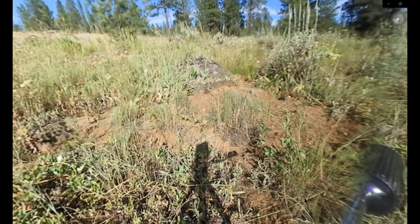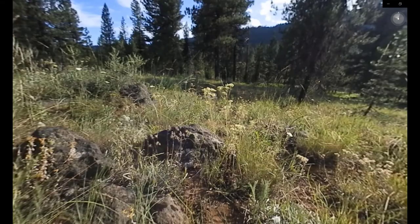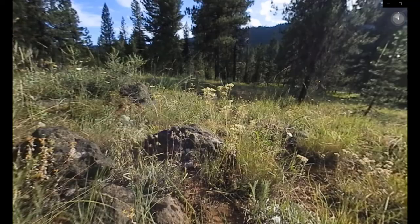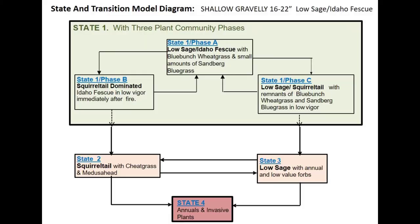Your job is to determine what phase or state in a state and transition model this site is in. Is it in State 1 Phase A, which is low sage dominated with Idaho fescue? Or is it State 1 Phase B, which is squirrel tail dominated? Or is it State 1 Phase C, which is low sage and squirrel tail?